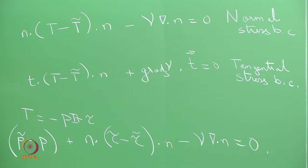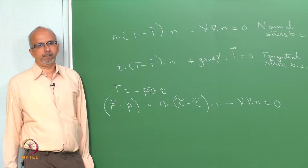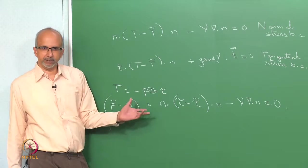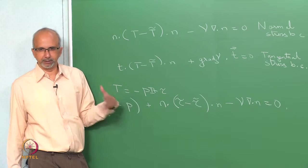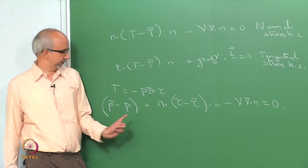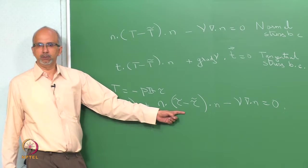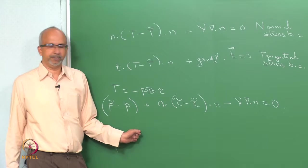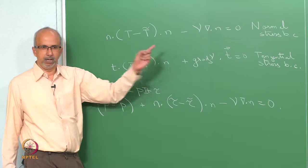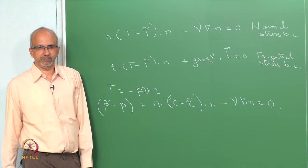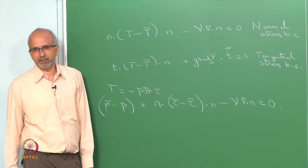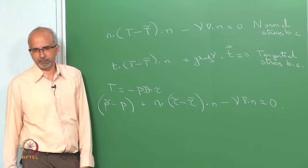Suppose there is no liquid moving inside and you only have your spherical drop, then the tau term is 0 and the difference in the pressures is balanced by the curvature term — which is what you are used to from surface tension courses: P1 minus P2 equals gamma/R or 2*gamma/R.